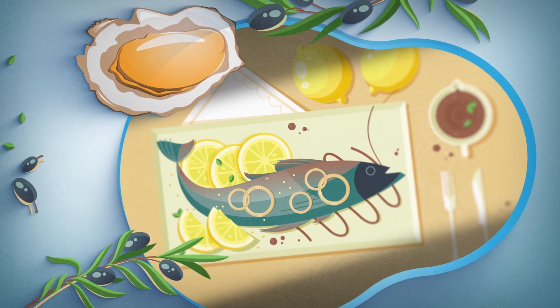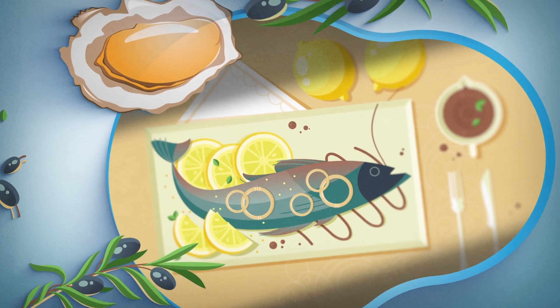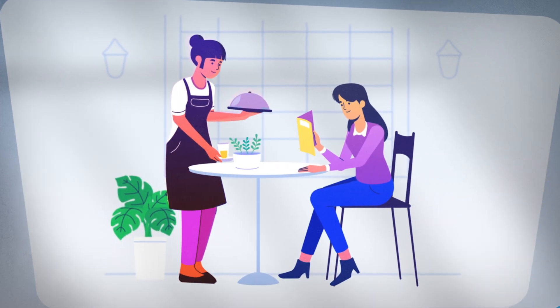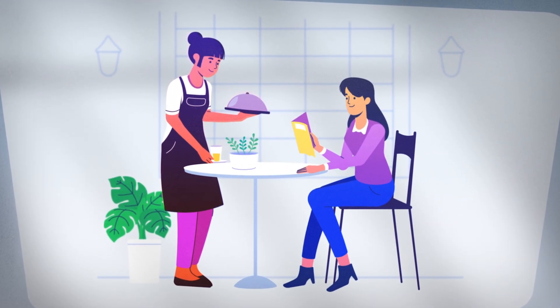In finfish, the brevitoxins accumulate in the organs of the fish, so the muscle and flesh of the fish remain unaffected and can still be eaten safely.